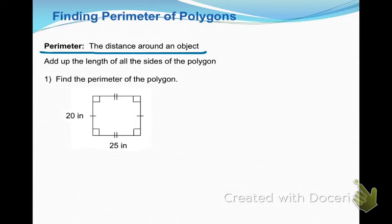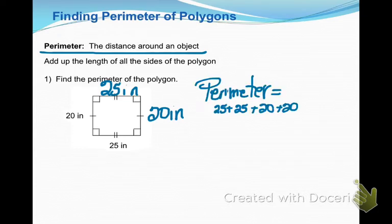I've got a rectangle here, and I know that the opposite sides of a rectangle are congruent, so I know all the side lengths. So my perimeter is just adding those all up, 25 plus 25 plus 20 plus 20, and that gives me 90. And since I'm figuring out perimeter, I need to have some sort of units on there.